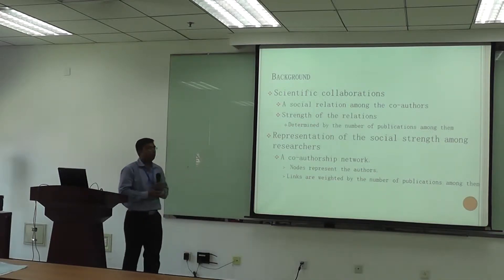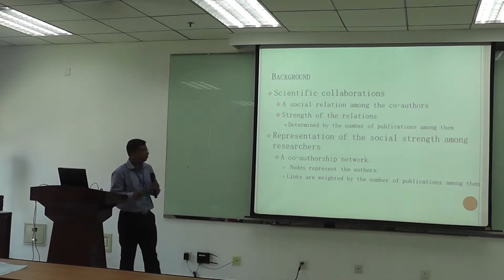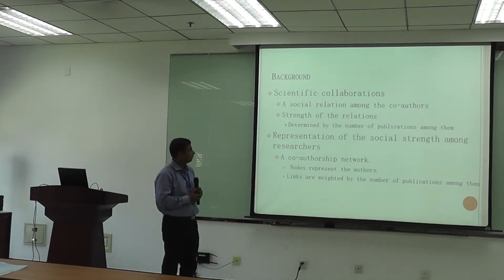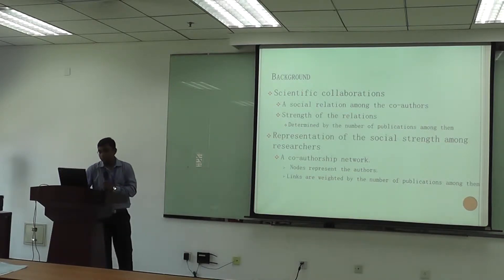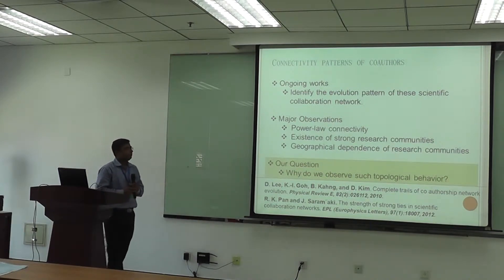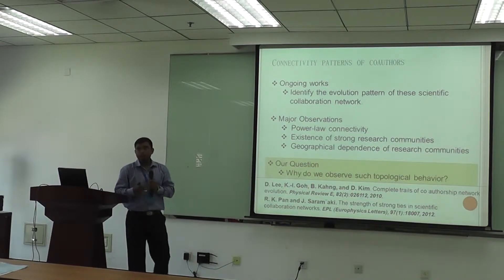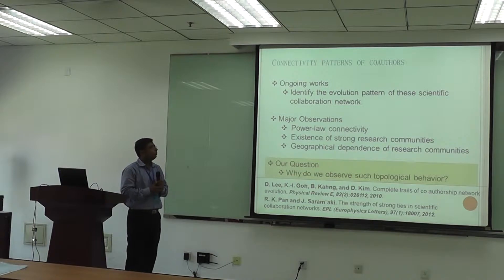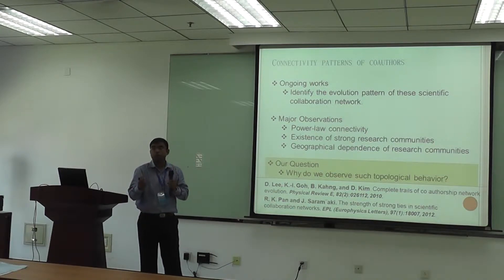We represent the social strength among researchers using a co-authorship network, where nodes represent authors and links are weighted by the number of co-authored works among them. This co-authorship network is not new and has been studied by several researchers. The ongoing area of research tries to identify the evolution pattern of these scientific collaboration networks — how collaborations among researchers take place.